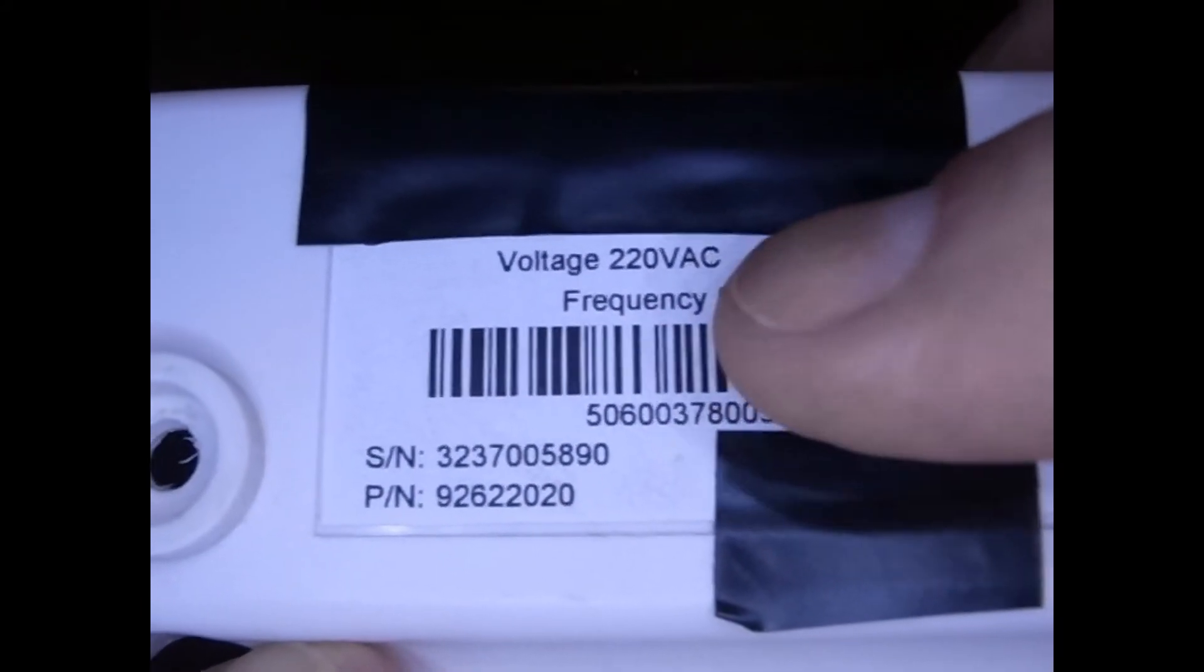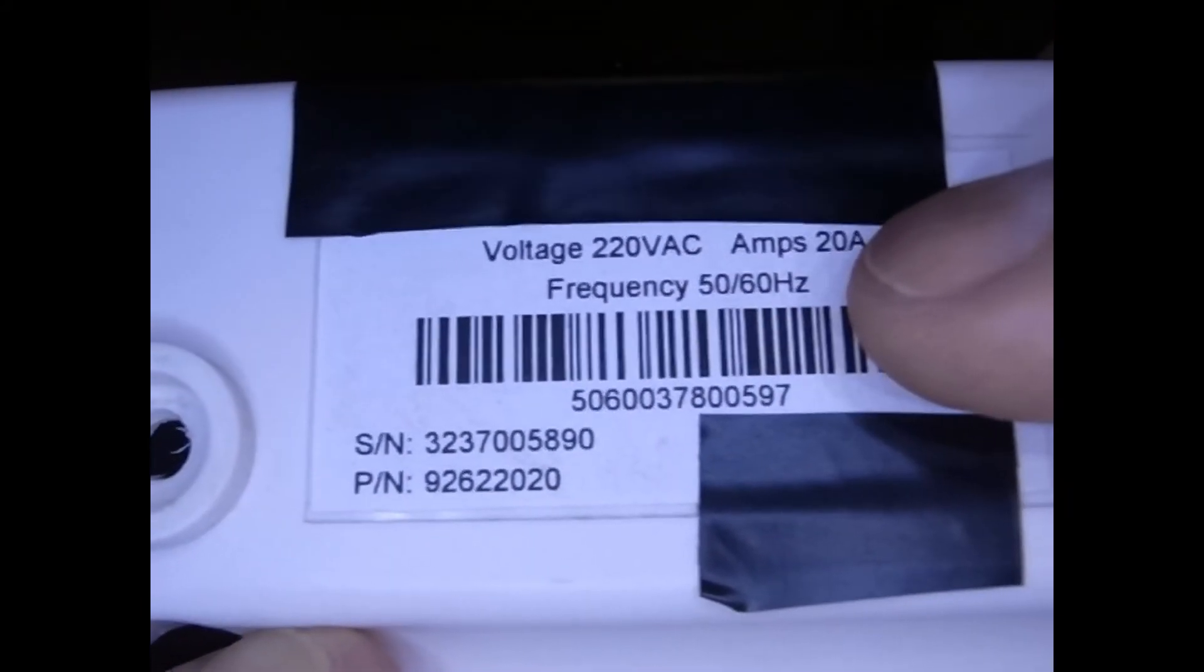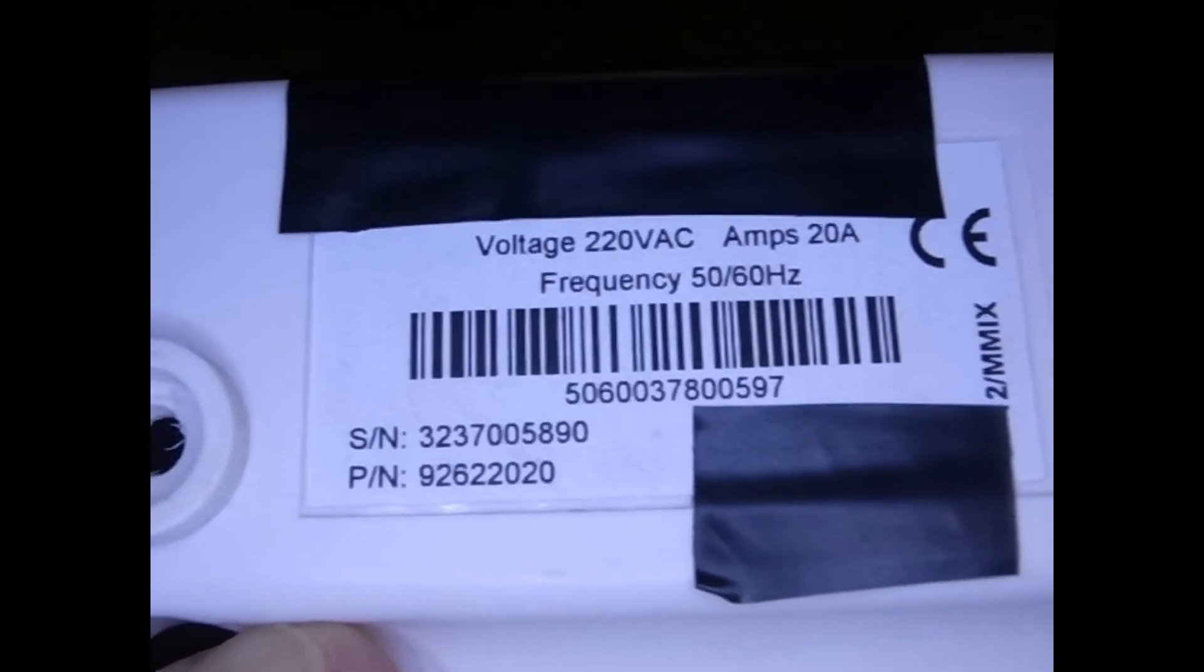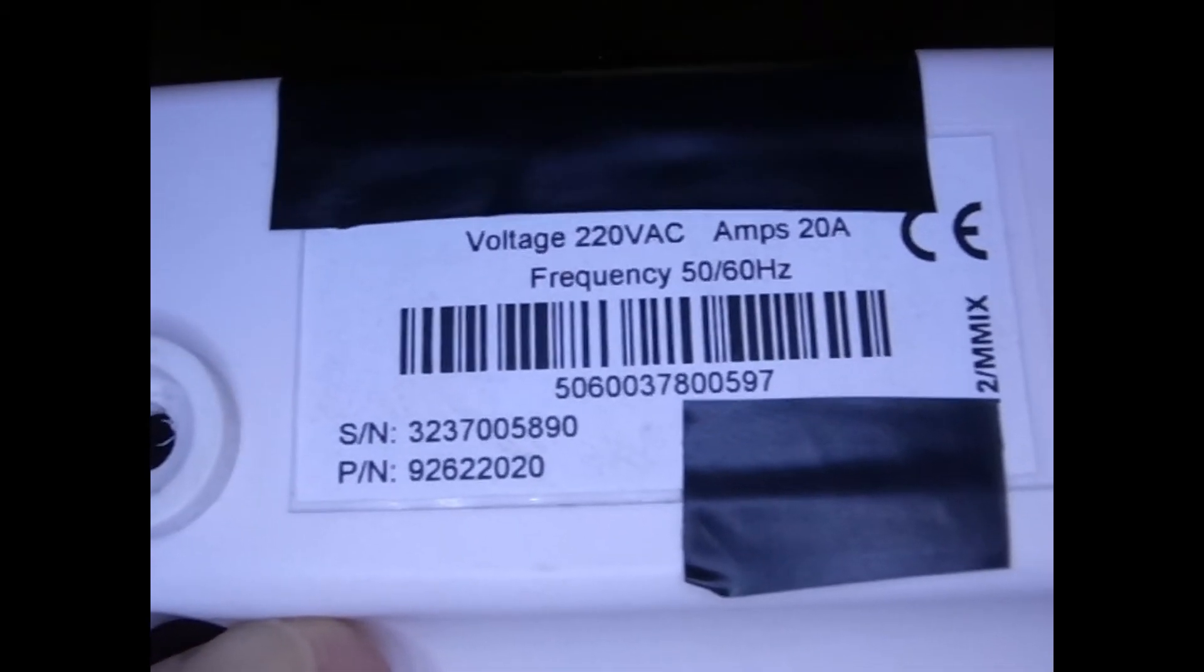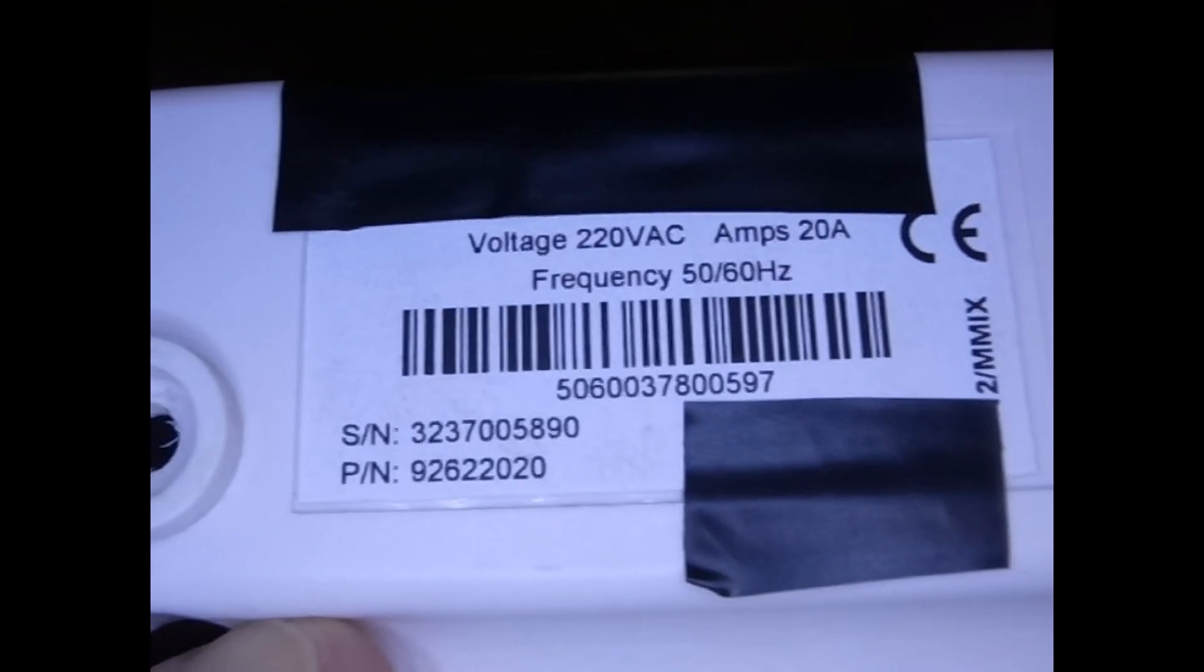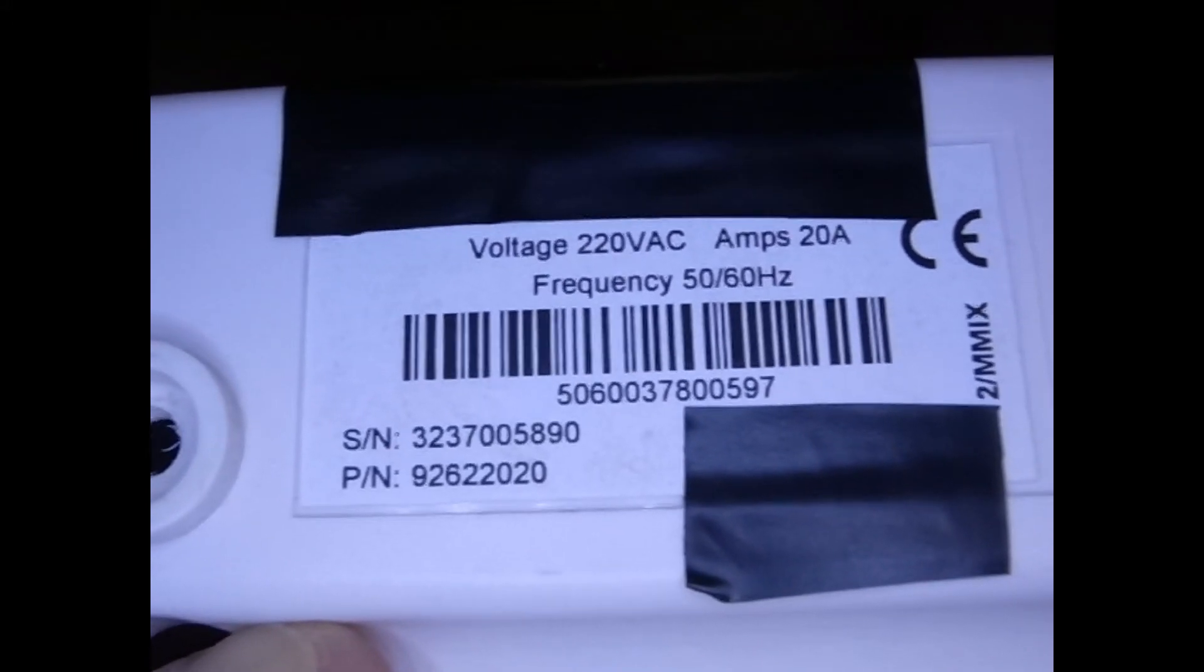As you can see from the label, it's rated at 220 volts, 20 amps frequency, 50 to 60 hertz. It was protecting an air conditioner. It's rated about 7 amps, so this should have had no problems.